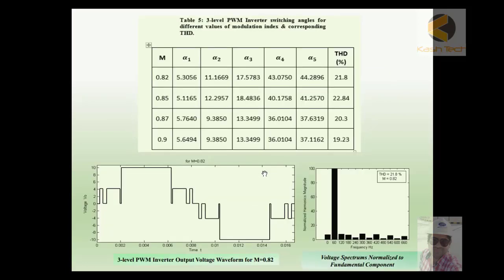Here you can see the error: if the modulation index is 0.82, the error is 21.8%. But in fact this error is high as compared to if you're using DCMLI alone at four level or five level, because here we are using only three-level DCMLI. If you use more than four or five levels, the error will be reduced.